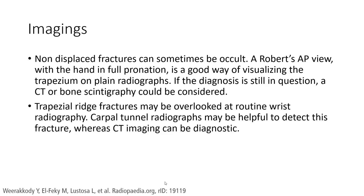Imaging. Non-displaced fractures can sometimes be occult. A Roberts AP view with the hand in full pronation is a good way of visualizing the trapezoid on plain radiograph. If the diagnosis is still in question, a CT or bone scintigraphy could be considered. Trapezoid fracture may be overlooked on routine wrist radiography. Carpal tunnel radiography may be helpful to detect this fracture, whereas CT imaging can be diagnostic.